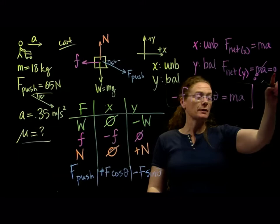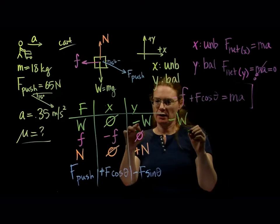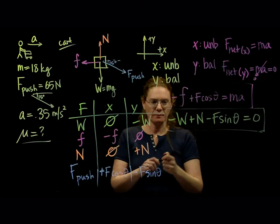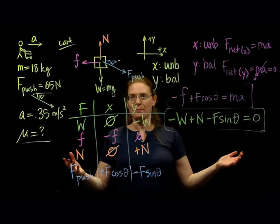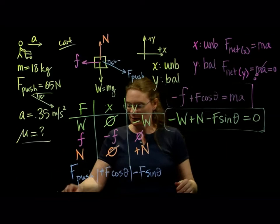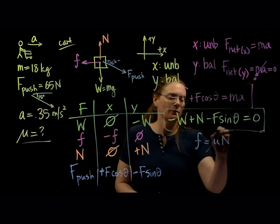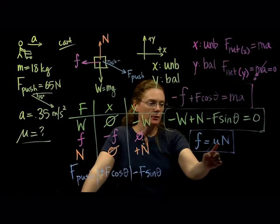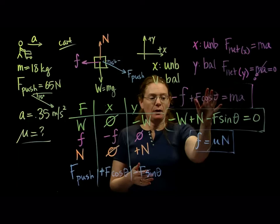Now the y direction: we have balanced forces, so the net force equals zero. Adding up all the y forces: negative w plus N minus F sine theta equals zero. That's our second equation. Now, what am I looking for? The coefficient of friction — and there's nothing in these equations with mu in it directly. But we know the friction equation: friction equals mu times normal. That's our third equation, and now we have three equations and three unknowns: friction, normal force, and mu. Solvable.